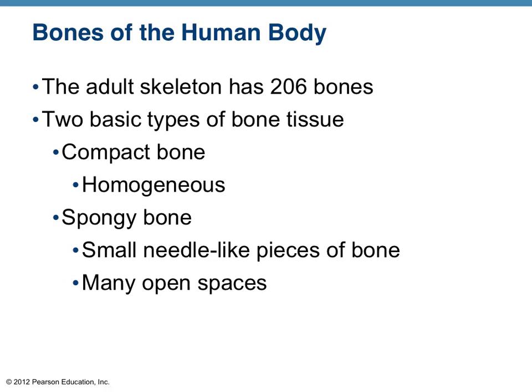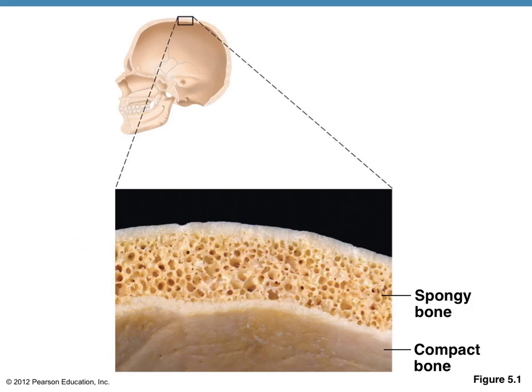In bone tissue, there are basically two different types: either compact bone or spongy bone. Looking at the pictures here, you can easily tell the difference, and it's pretty self-explanatory why spongy bone is called spongy and compact bone is called compact.